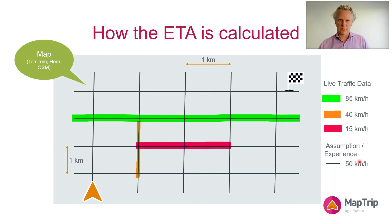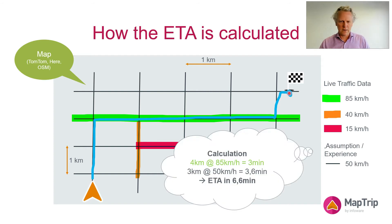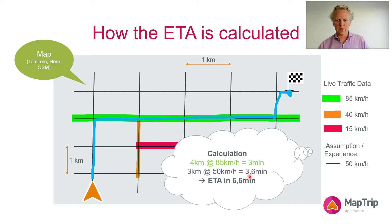The routing algorithm tries to figure out the best route, and this is what it comes up with — this blue line. We go up two sections, then move along the green sections, up one more section, and then we've reached our destination. Now the ETA and drive time are calculated. There are four segments representing four kilometers at 85 kilometers an hour — that takes three minutes. Then three segments at 50 kilometers an hour adds another 3.6 minutes. In total, the routing algorithm tells you that you need 6.6 minutes to reach your destination.